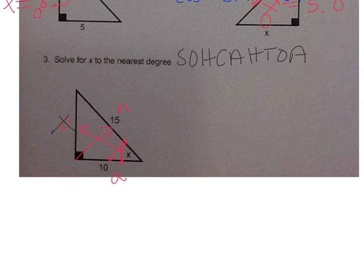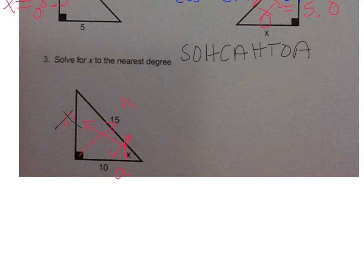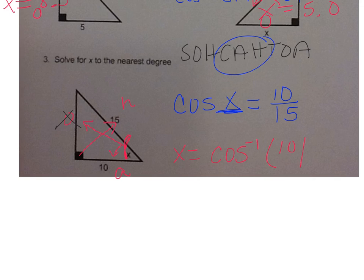All right, so which function uses A and H? That would be cosine. So it's going to be cosine of my angle. It goes right next to the trig function, which is x equals A over H, 10 over 15. All right, since I'm trying to find an angle, I use the inverse key. So it's x equals the inverse of cosine. And then when you type this in your calculator, you get parentheses. So you're going to type in 10 divided by 15. Hit enter. This is to the nearest degree, which means a whole number. You get 48 degrees.